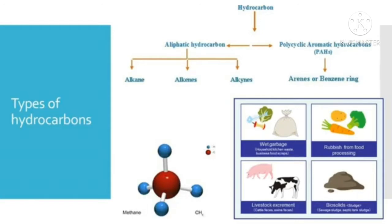The chemical formula for methane is CH4. The chemical formula for ethane is C2H6. The chemical formula for propane is C3H8. The chemical formula for butane is C4H10. And the chemical formula for pentane is C5H12.